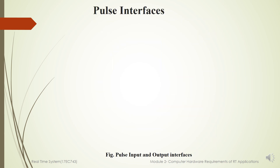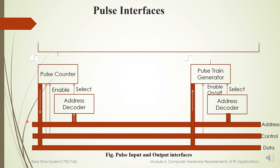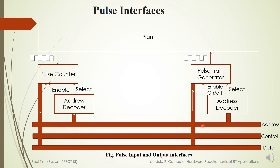Pulse Interfaces. Both input and output pulses are used. For the pulse input interface, counters are connected to a line from the plant. This counter is always reset under program control, and at fixed lengths of time the contents are read by the computer. The counter has logical circuitry that manages the length of time for which counting is carried out, and this length of time is decided by the real-time computer. The enable signal is also activated to exhibit the counting of pulses.